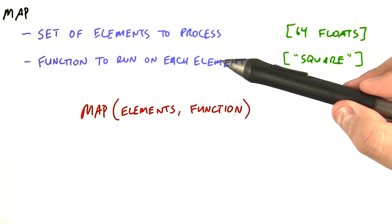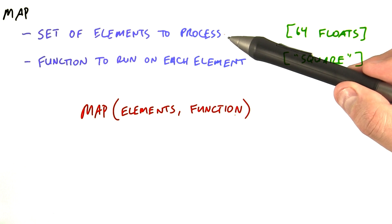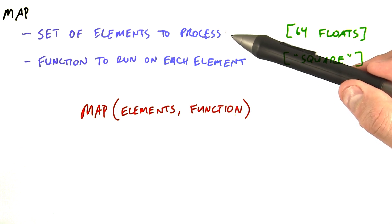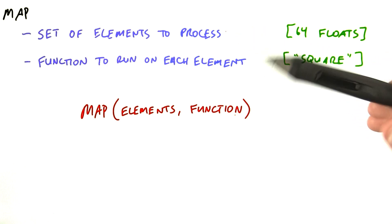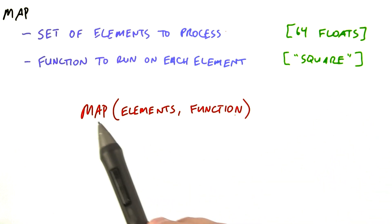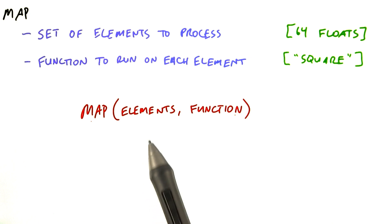Generically, what we did was apply our function to each element in the set. This is a powerful parallel operation. So to be precise, when we talk about this, we say that we have an abstraction named map. It takes two arguments, a set of elements and a function that will be applied to each of those elements.